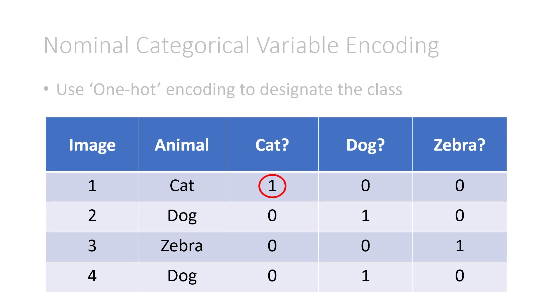We place a one at the correct answer. So since the first animal is a cat, we put one in the cat question mark column, and since it is a cat, it cannot be a dog or a zebra, and so we place zeros throughout that row. For the second row, it's a dog, so cat is zero. It's not a cat. It is a dog, so we place a one, and it's not a zebra, so that's a zero. Same thing for zebra, and the other dog would have the exact same one-hot encoding as all of the other dogs.